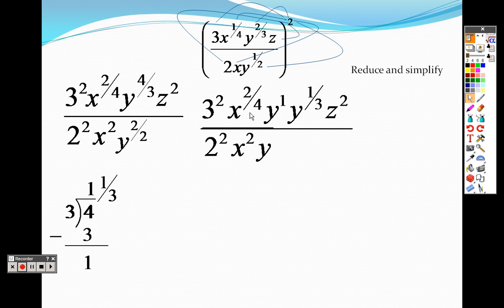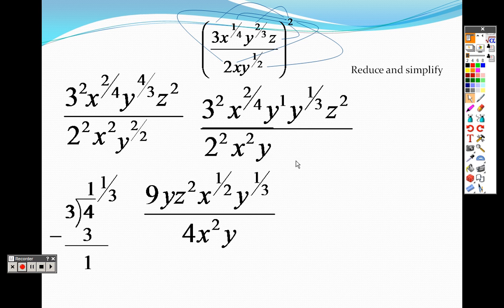On top I can reduce, that is a nine, right? Three squared is nine, two squared is four, that's where I got the four from. This y I put out in front with the z, and I moved all the fractions to the back. This x to the two-fourths I reduced to x to the one-half, and there is the y to the one-third. On the bottom, two squared is four, x squared, and y.